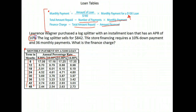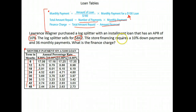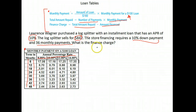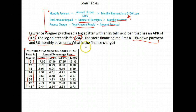Here is Lawrence Wagner. He has a loan with an APR of 10% for a log splitter that's eight hundred and forty-two dollars. The store financing requires a 10% down payment and 36 monthly payments. What is his finance charge? First we're going to have to find out what the amount of the loan is, and here I'm going to use the complement method just to save some time.